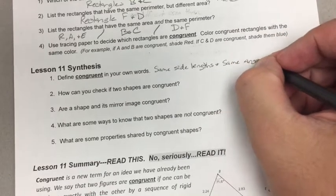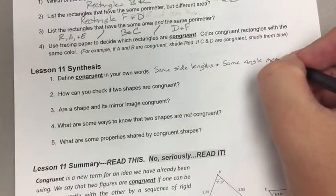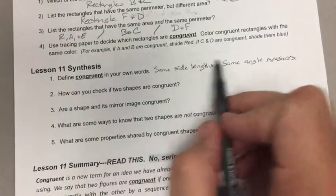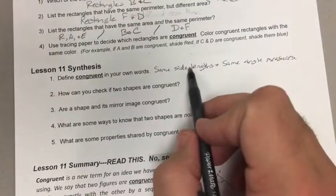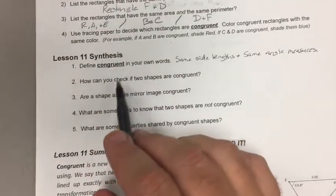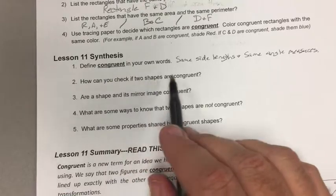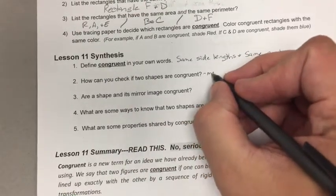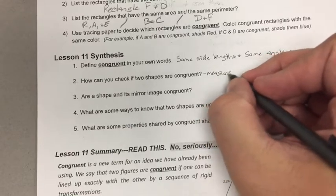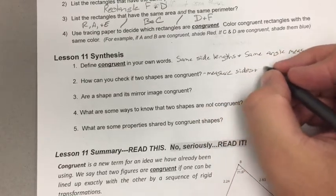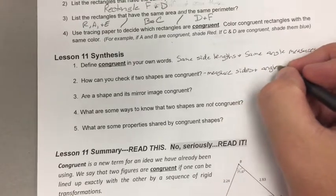These are the two you gotta have - both of these, not one or the other. You gotta have both of these: same side lengths and same angle measures. How can you check if two shapes are congruent? Well, there are a couple of things. You could measure the sides and angles.